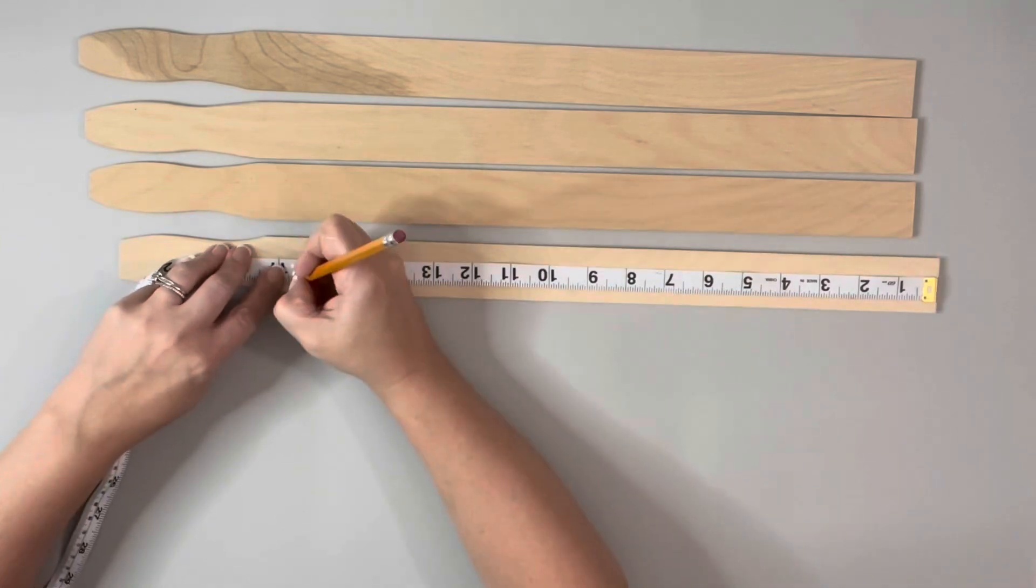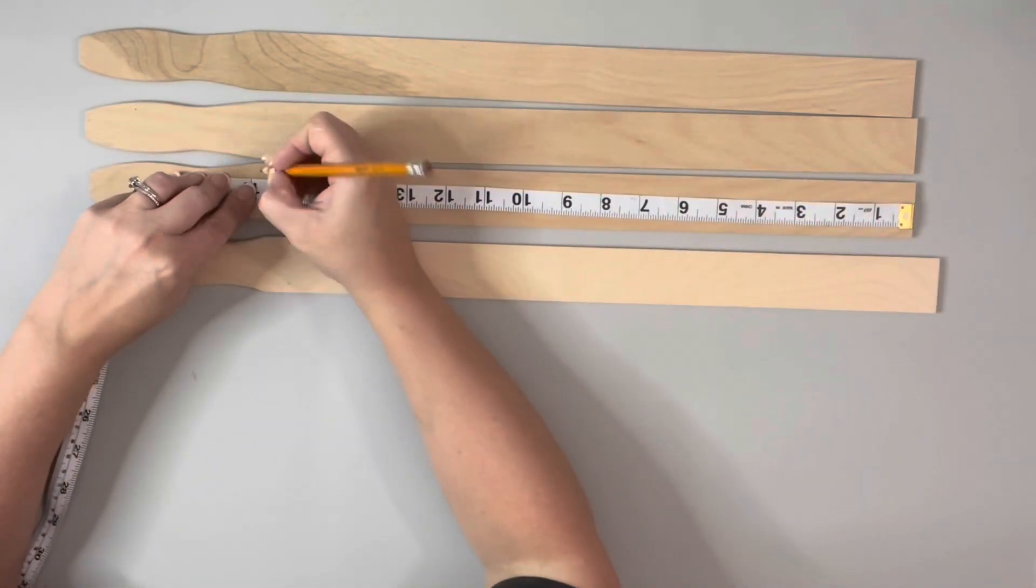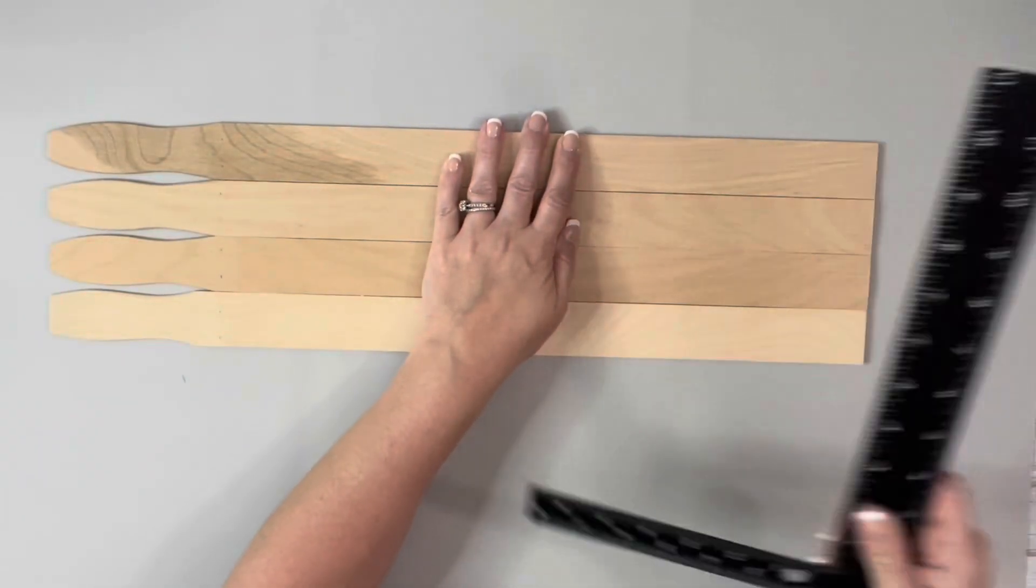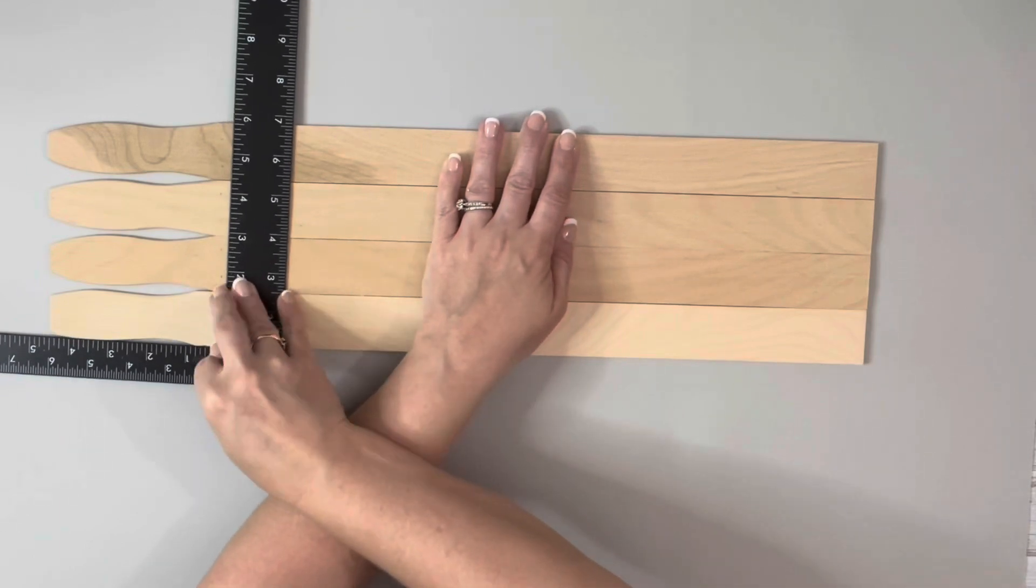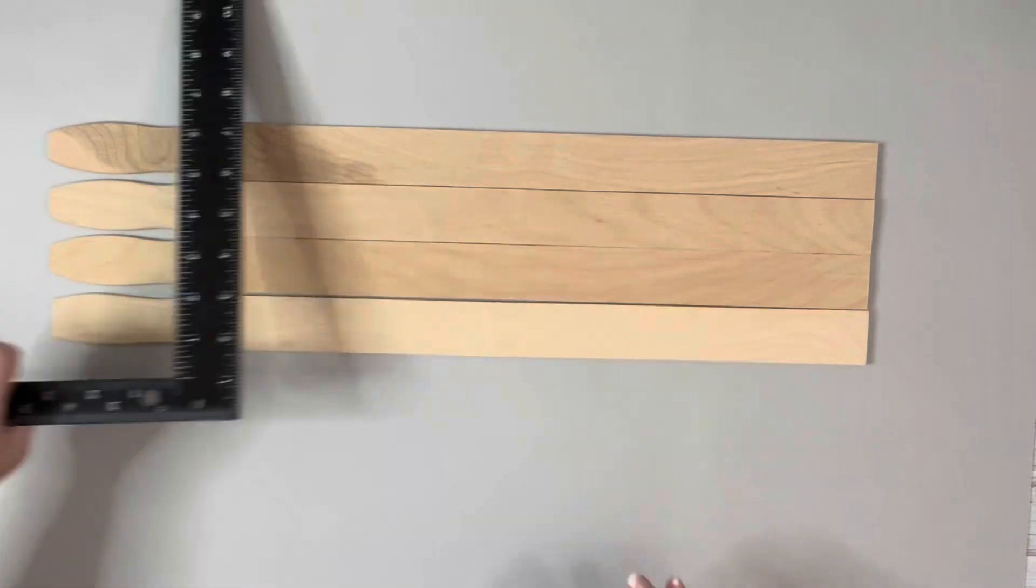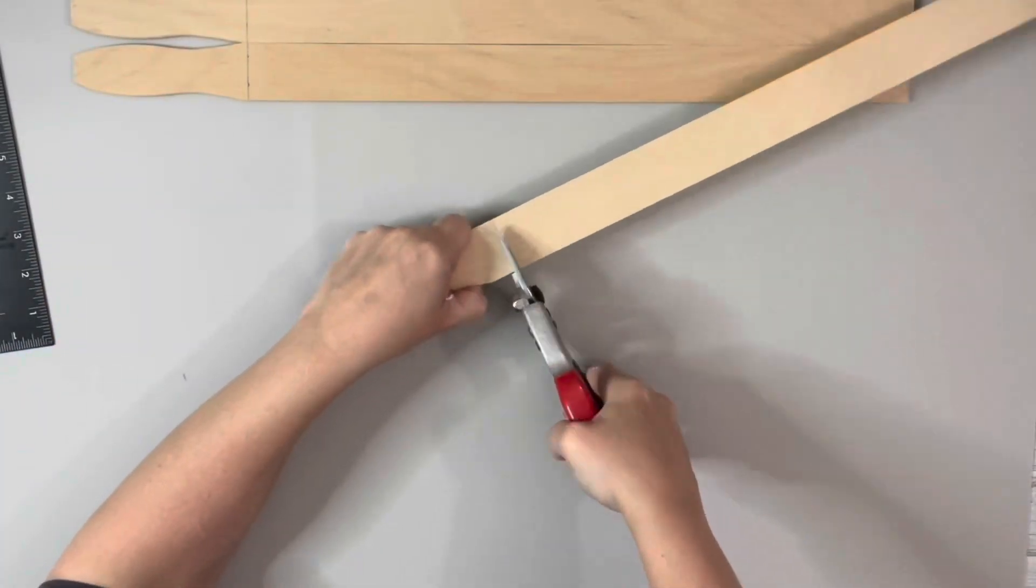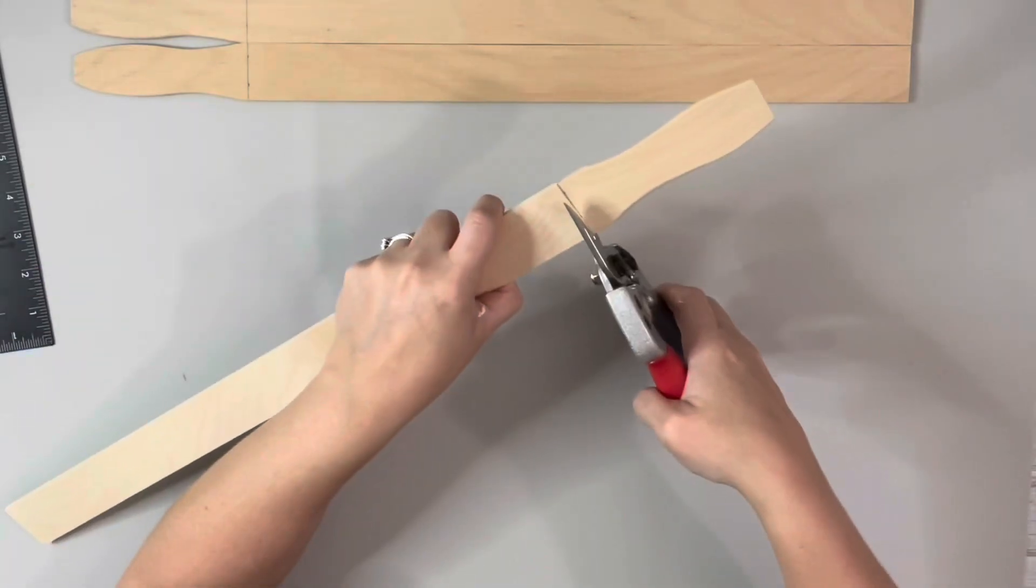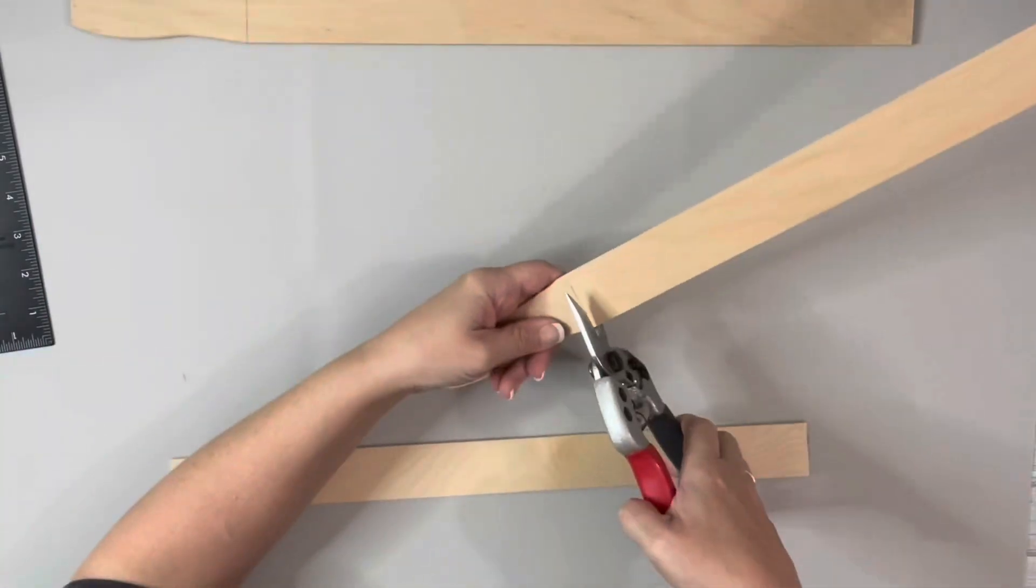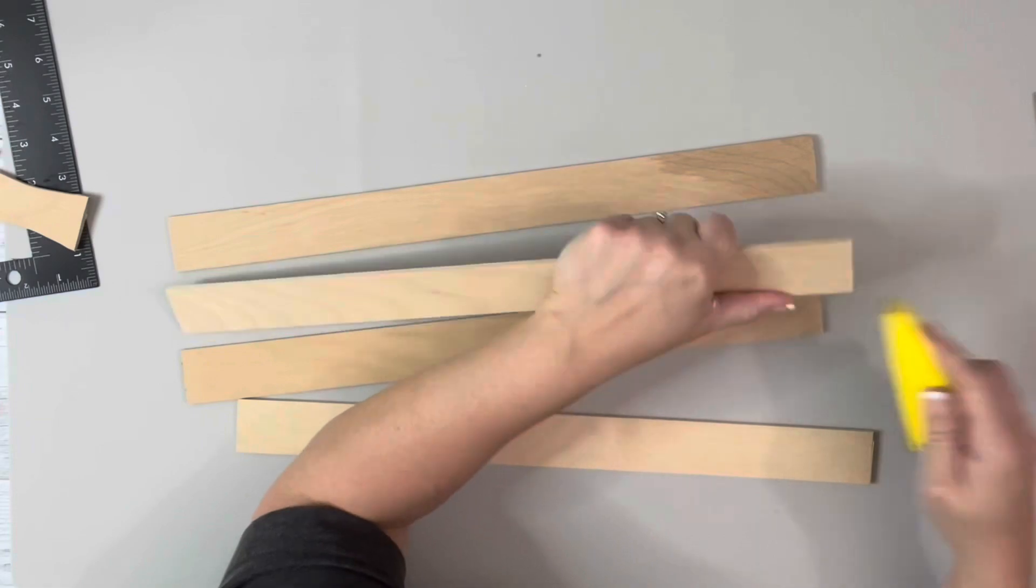Then I took my stir sticks, these are five gallon stir sticks I got from Walmart, and measured them out about 16 and a half inches, made sure that they were all lined up, then made a straight line just to make sure they were all going to be the same length. Then I used my pruning shears to cut those stir sticks down. You don't have to do this. If you like the stir stick look, you can just leave them as they are and just have the stir stick be the top of the shelf.